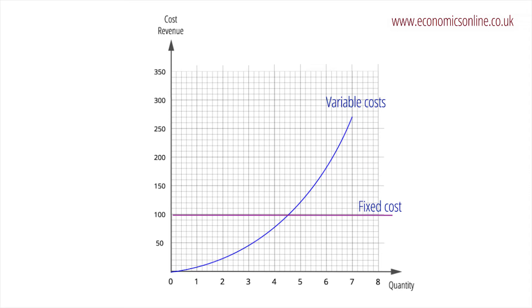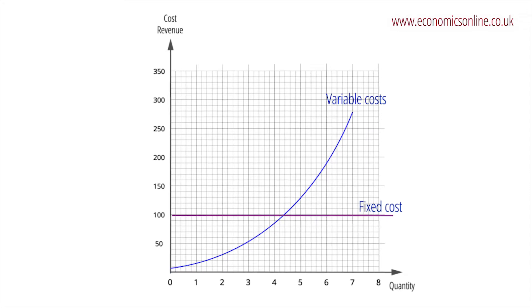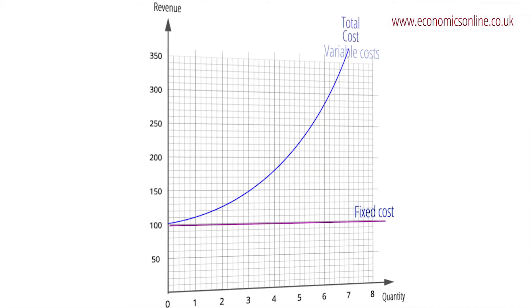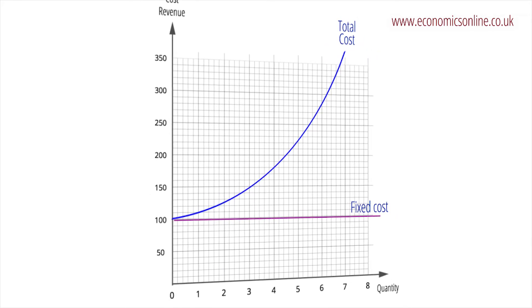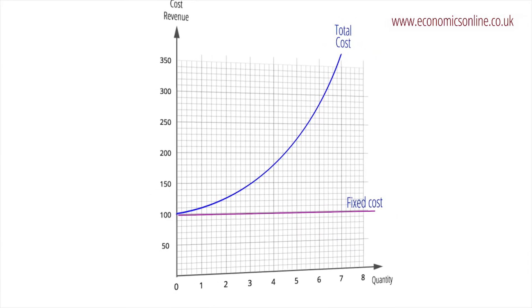Total costs are found by adding fixed and variable costs. The position of the total cost curve reflects the amount of fixed costs and its gradient reflects variable costs.